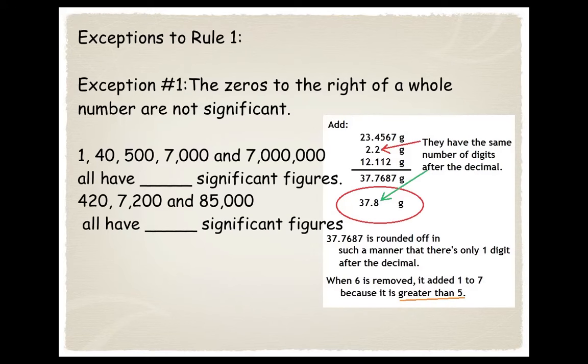Here are some exceptions to rule one. The zeros to the right of a whole number are not significant. So 40, 500, 7,000 - they all just have one significant figure. 420, 7,200, 85,000 - they all have two significant figures because they have two numbers. The zeros to the right are not significant.